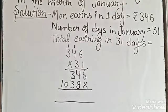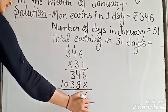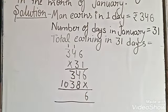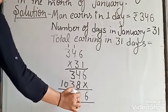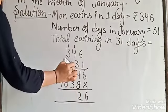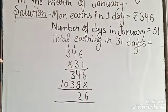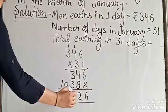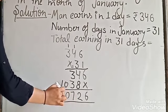Now we add. 6, then 4 plus 8 is 12, write 2 and carry 1. 3 plus 3 is 6, plus carry 1 equals 7. 0 and 1.